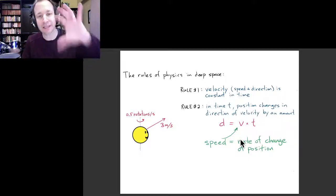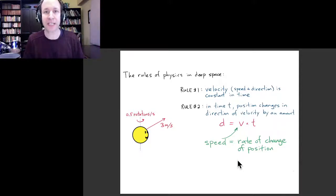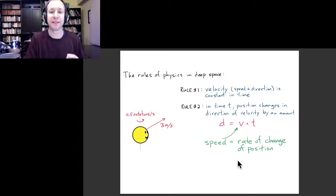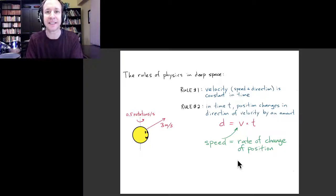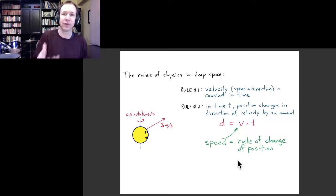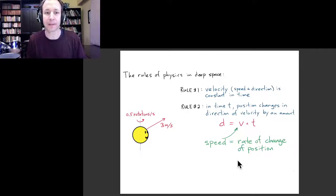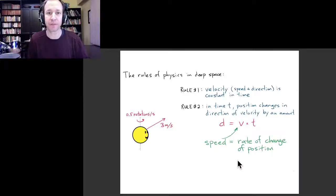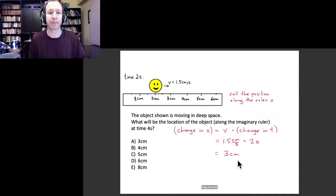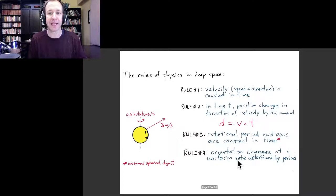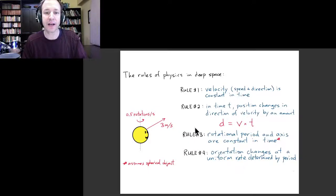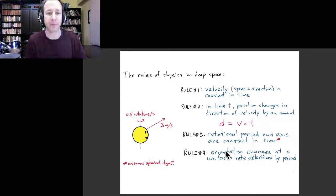We're going to talk in later lectures a lot about rates of change of various quantities. One thing to point out here is that this velocity is our first example of a rate of change. The velocity is the rate of change of the position of an object. But we'll see that concept coming up a lot more in the future. Let's skip this for now. What I want to do is talk about the rules for the rotational part of the motion.